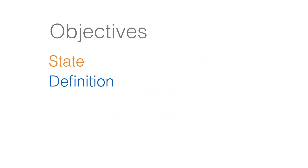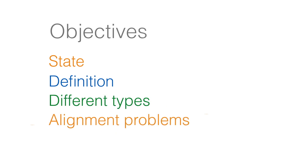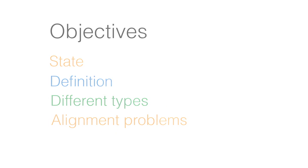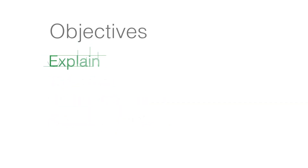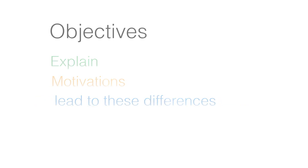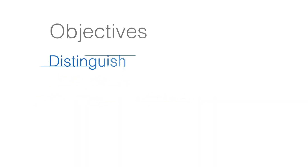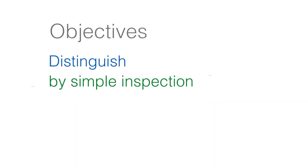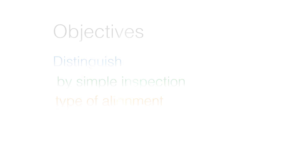State formally the definition of each of the different types of alignment problems. Explain the motivations that lead to these differences. Distinguish by simple inspection the type of a given alignment.